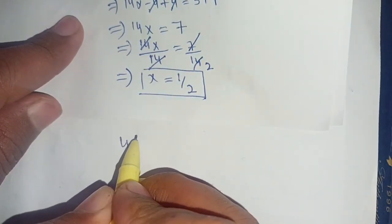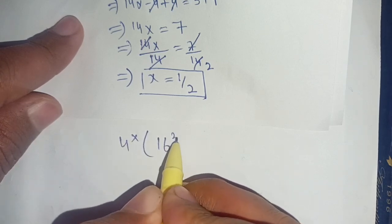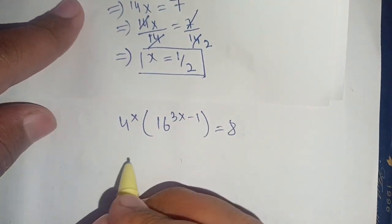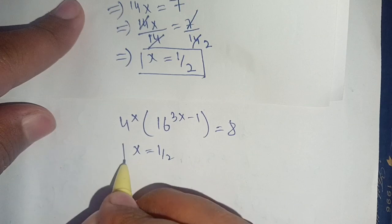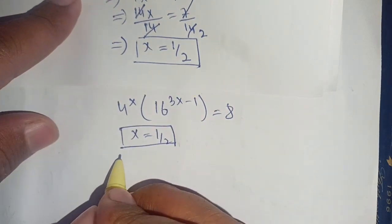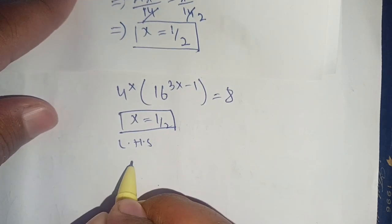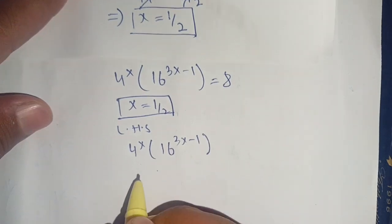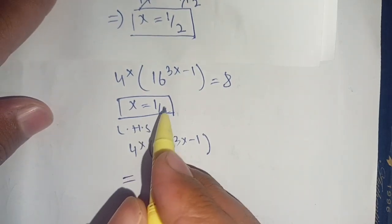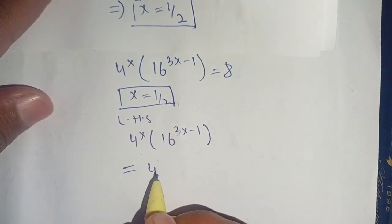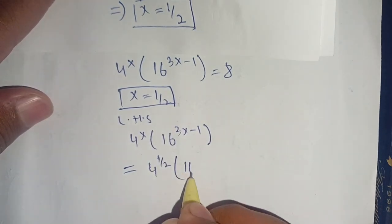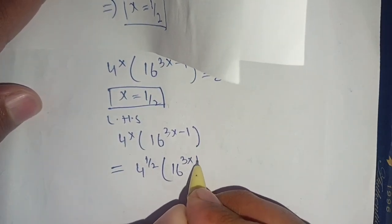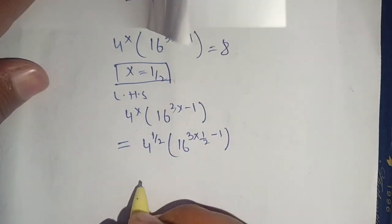Our given equation is 4^x · 16^(3x - 1) = 8. To verify that x = 1/2 satisfies the equation, we substitute into the left hand side: 4^(1/2) times 16^(3·(1/2) - 1).